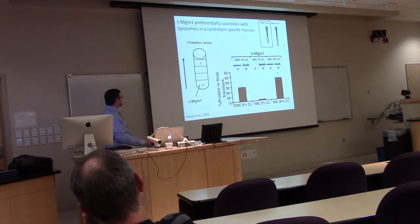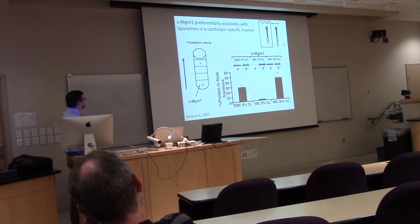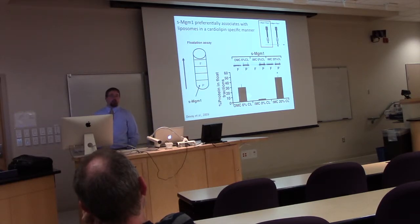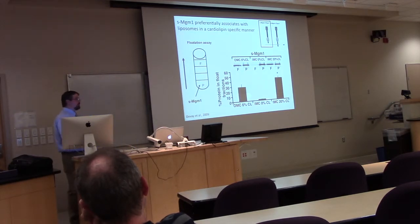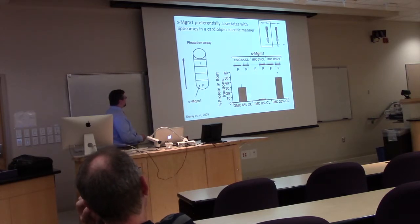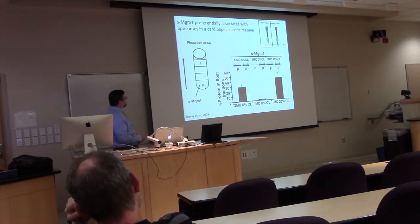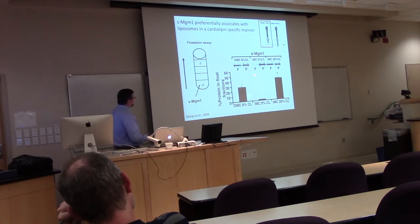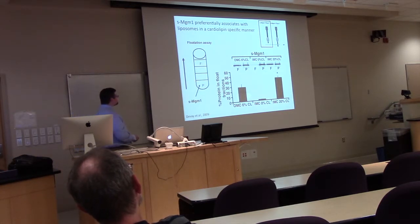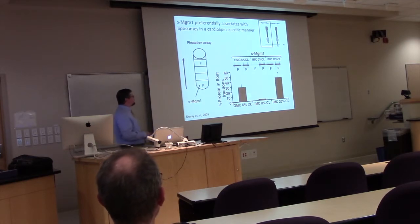In vitro, if we purify short MGM1, we can see how it interacts with lipids using a flotation assay: short MGM1 is loaded with liposomes on a sucrose gradient; liposomes float to the top while protein pellets to the bottom — so only if protein associates with liposomes will it float. Short MGM1 pellets with 0% cardiolipin liposomes, but shows quite a bit of flotation with inner membrane-content liposomes containing 20% cardiolipin, and even some at 6%. So short MGM1 associates with lipids in a cardiolipin-dependent fashion.